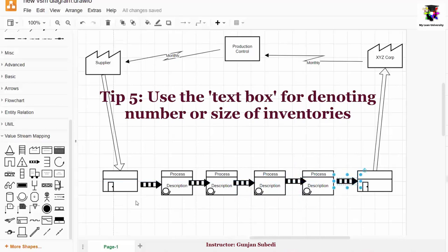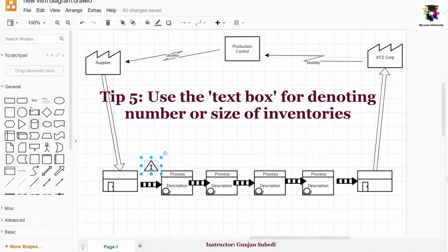The next tip is about drawing the inventory. For that too, you can adjust the size of the inventory symbol. And then we also need to write the number of inventories. So for that, you have to go to the general, click on the text. And we can drag the text below the inventory symbol.